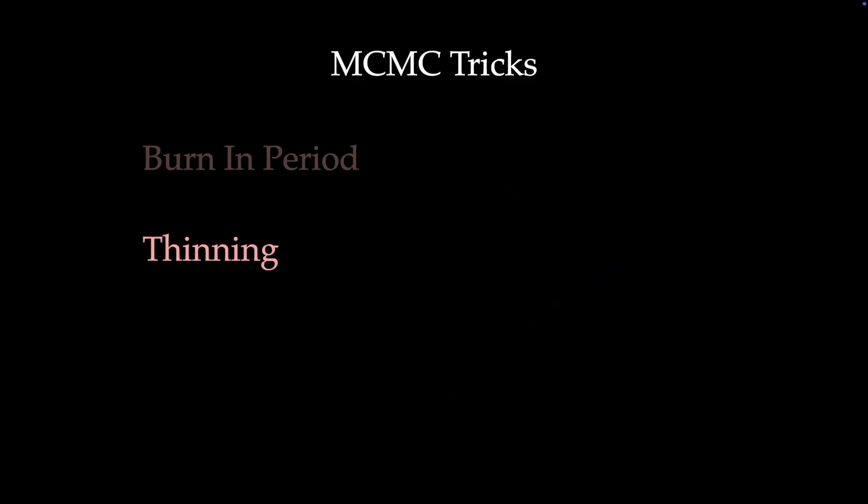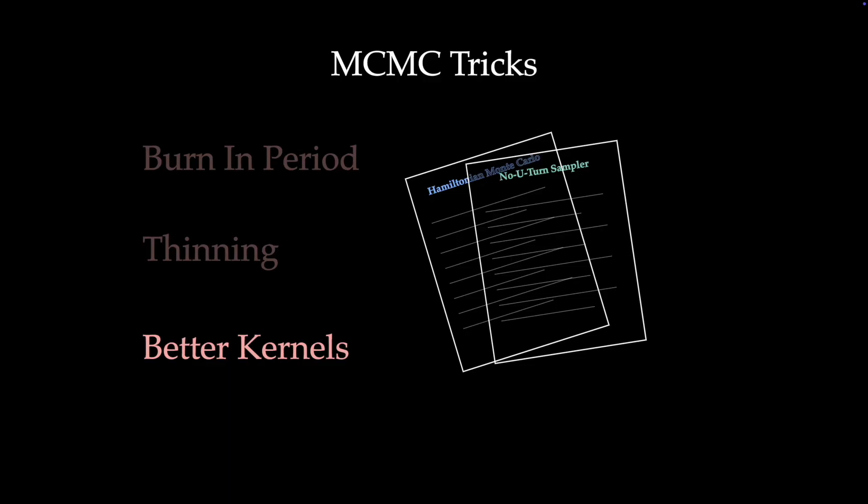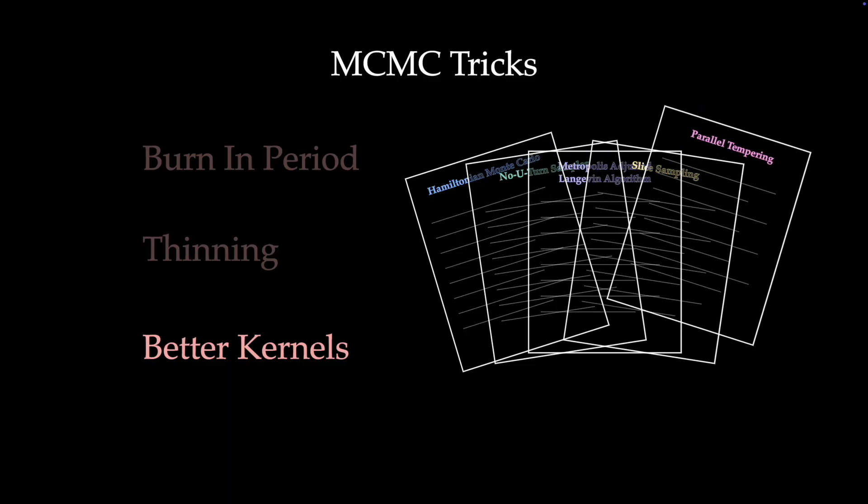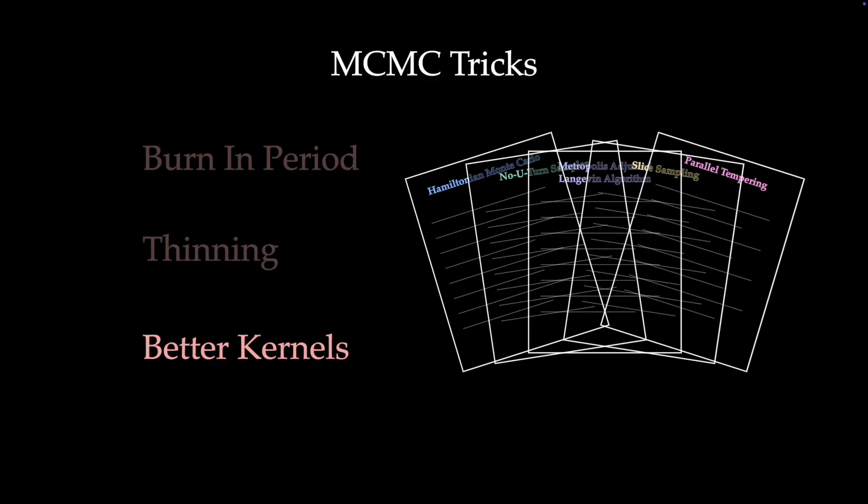The final trick I want to talk about has to do with the kernel. It turns out that the performance of MCMC for finite sample sizes is highly dependent on the choice of kernel. There are lots of creative ways to select this kernel though, especially if you have access to the gradient of the density function. You may have heard the names of methods like Mahler, Hamiltonian Monte Carlo, and many others, all of which rely on cleverly crafted kernels to improve the efficiency of MCMC.